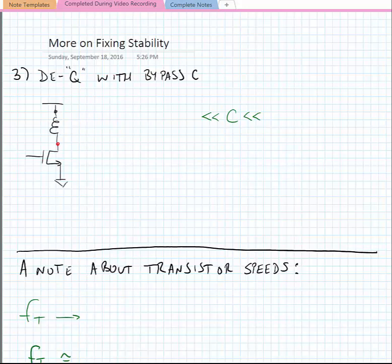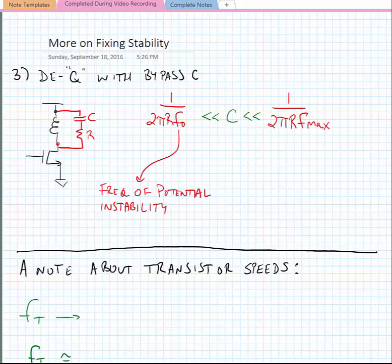We can also dequeue with a bypass RC network. This adds some frequency selectivity to the dequeuing network. And we can set limits on the size of the capacitor that we use. For instance, we can set a limit that says that the C is greater than 1 over 2 pi R times F naught, where F naught is the frequency of potential instability. And we can also say that C is less than 1 over 2 pi R times F max, where F max is the F max for the device, which is the maximum power gain frequency of the device.